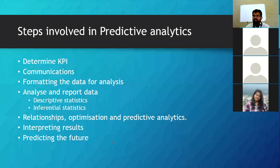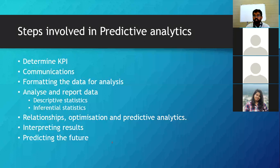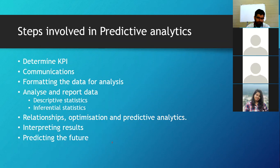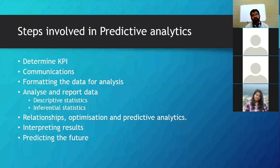What is the value for perfectly negative correlation? It's minus one. Then what is positive correlation? The value is between zero and one. And negative correlation is between zero and minus one. And no correlation is zero. So that is what relationship is all about — correlation helps you understand how the variables are related to each other. It is a part of inferential statistics.